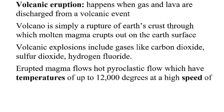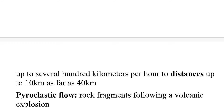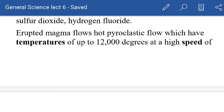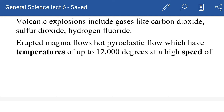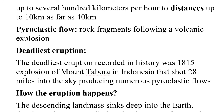Erupted magma produces a hot pyroclastic flow. Pyroclastic flow is the flow of rock fragments following a volcanic explosion, occurring at very high temperatures — up to 1,200 degrees Celsius — and at speeds of several hundred kilometers per hour, covering distances of up to 40 kilometers. Because of this extreme temperature and speed, vast areas are affected.